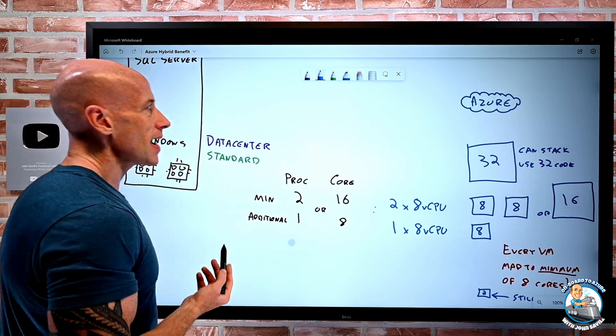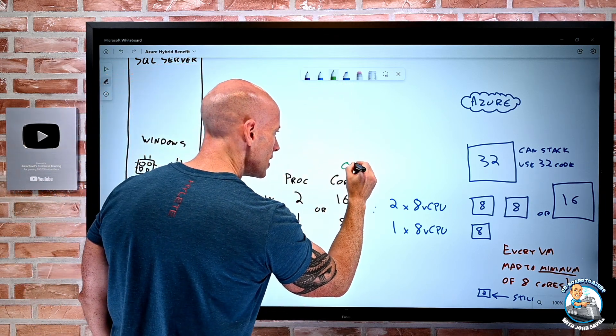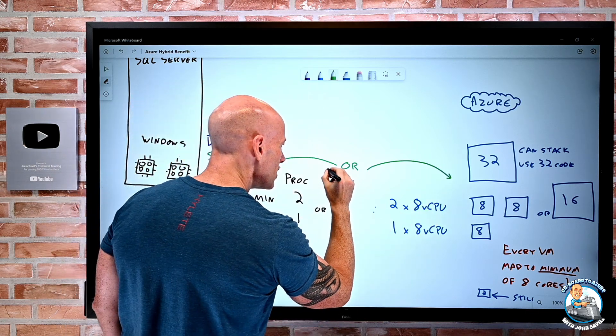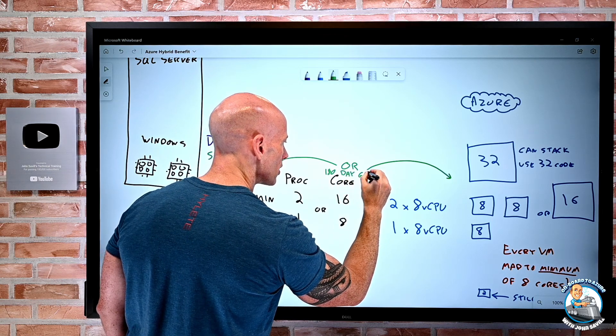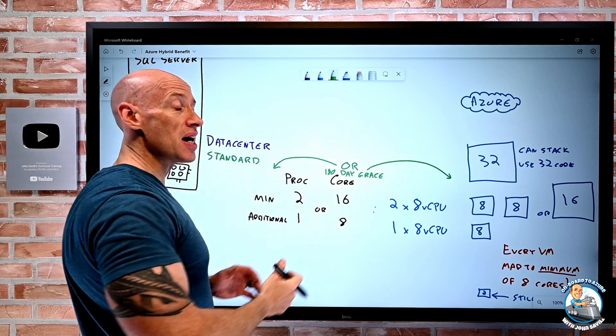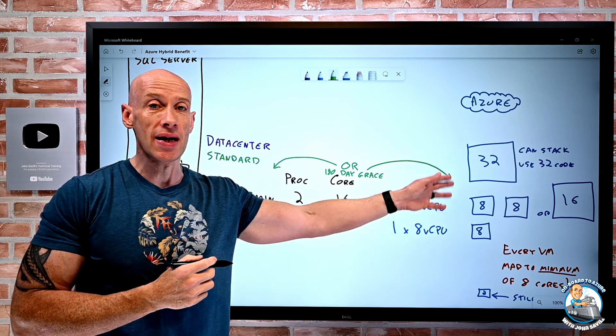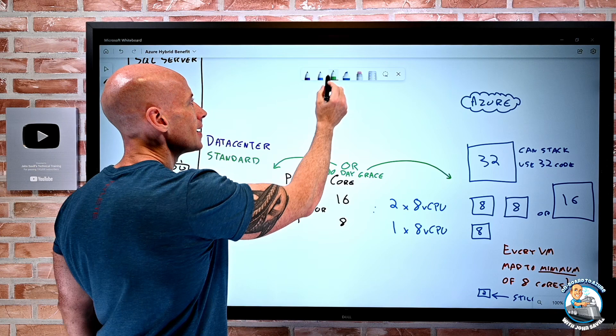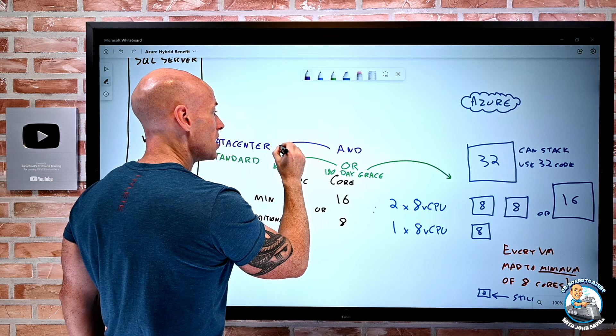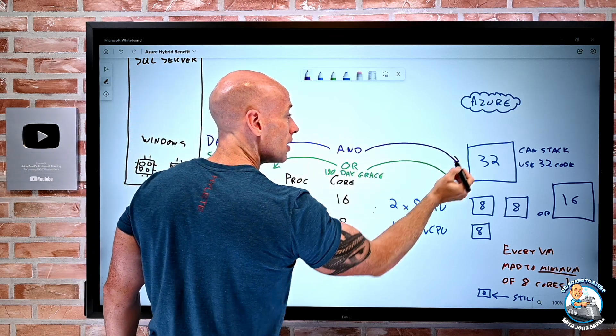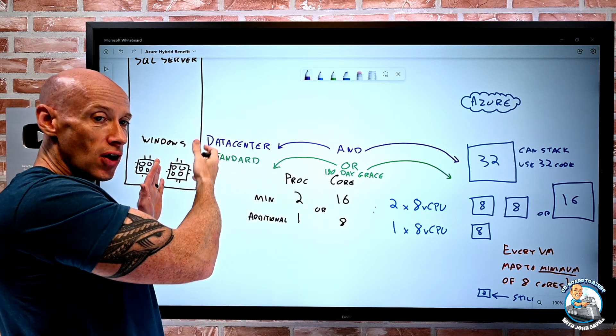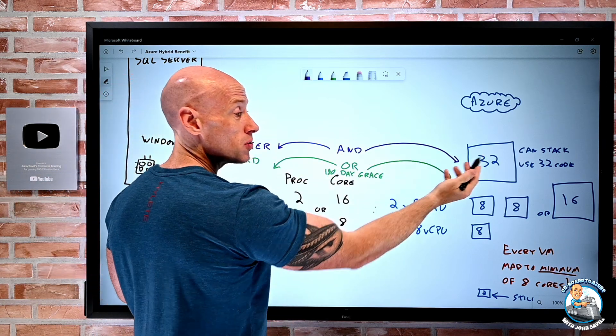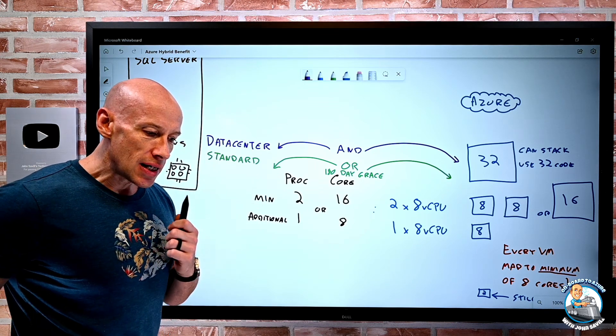Now, the reason I drew the datacenter and standard in different colors is with standard licenses, it's or. I can use the licenses on-prem or I can use them in Azure. Now, what I do get is a 180-day grace period. I'm migrating from on-prem to Azure, so I can apply that Azure Hybrid Benefit to the VMs I'm creating in Azure and not have to pay the Windows server license and still run them on-prem for 180 days to help me do my migration. With datacenter, it's and. I can still use the license on-prem and I can use that license benefit in Azure as well. I've got a whole bunch of cores I've licensed because I use virtualization. I'll run Windows server in the guests. I can still carry on running those on-prem, and as a bonus, I can also use that number of cores against stuff I have running in Azure.